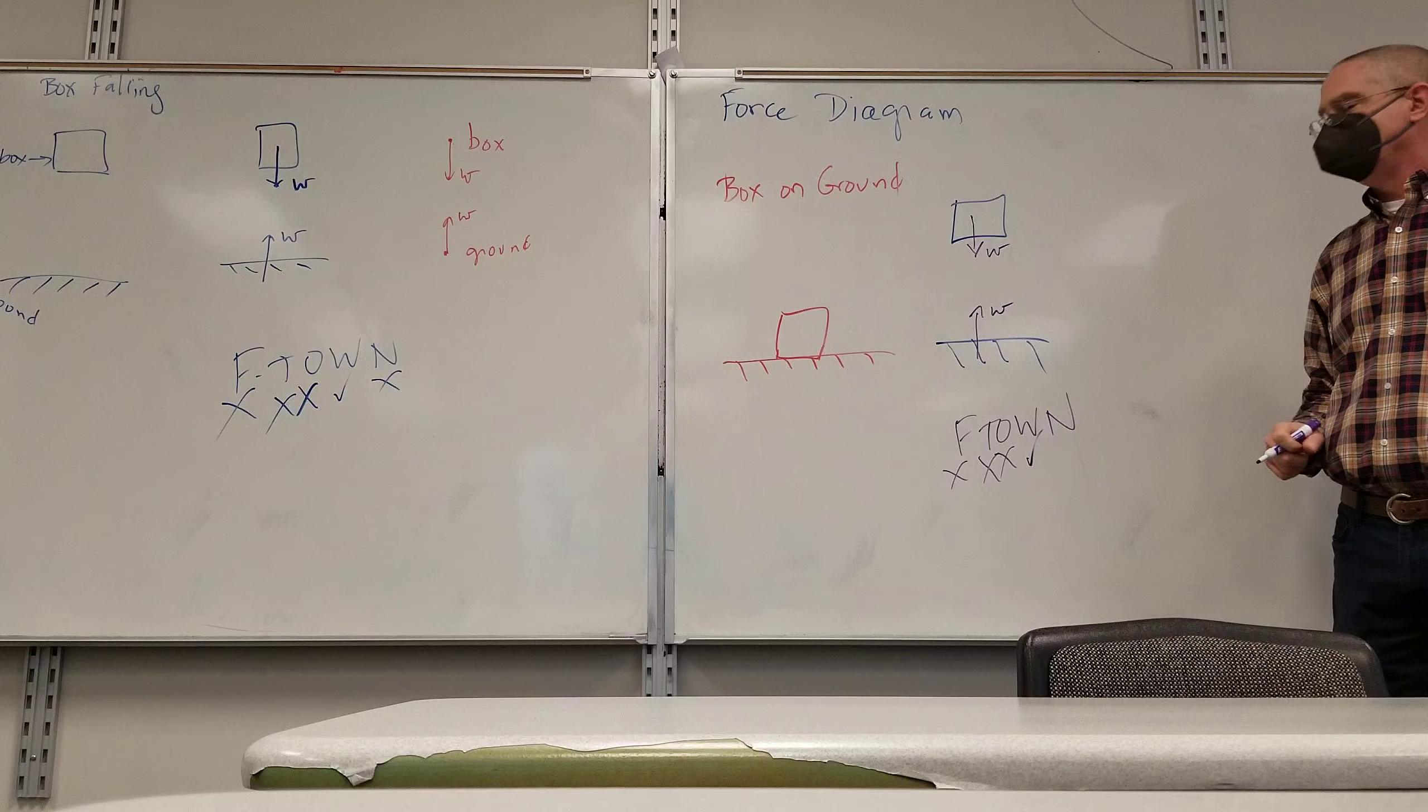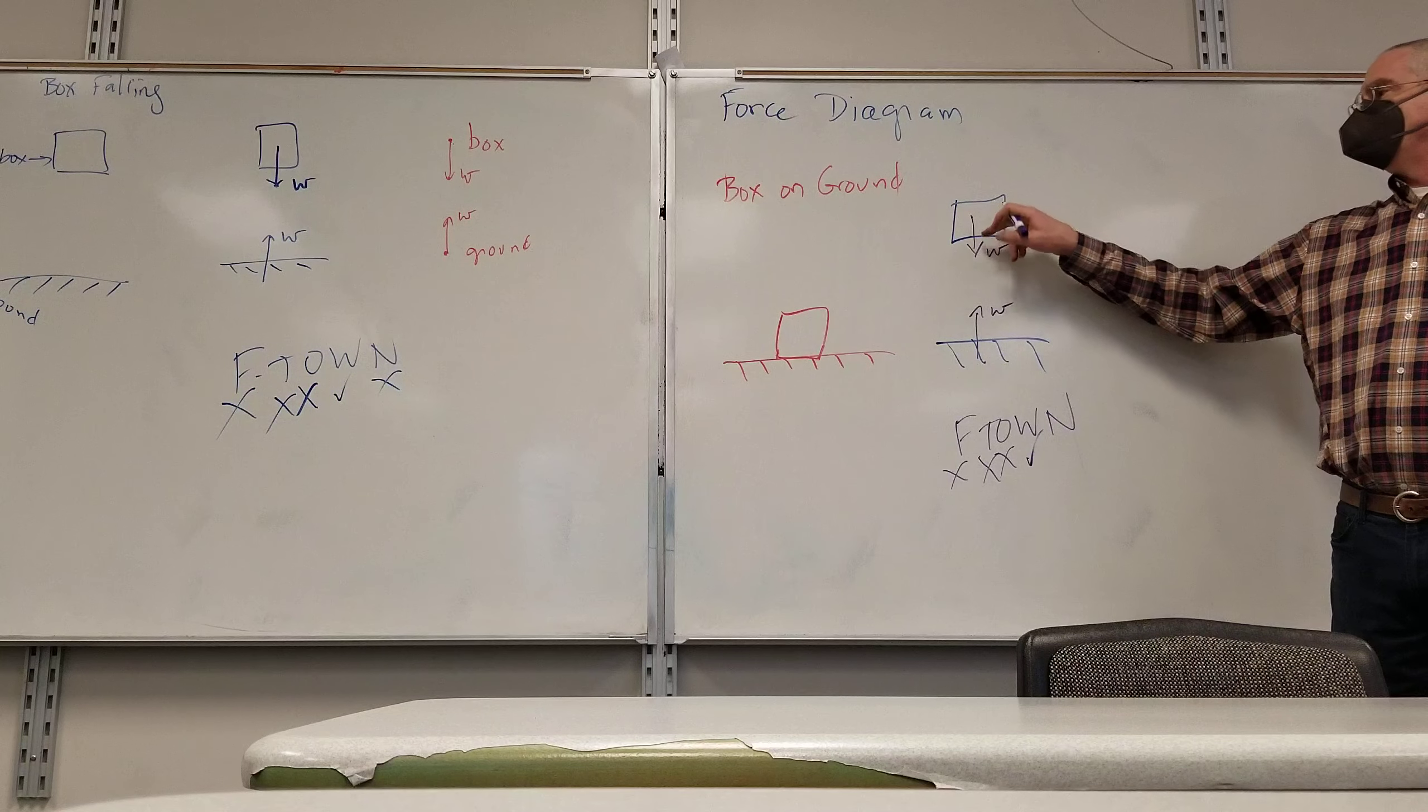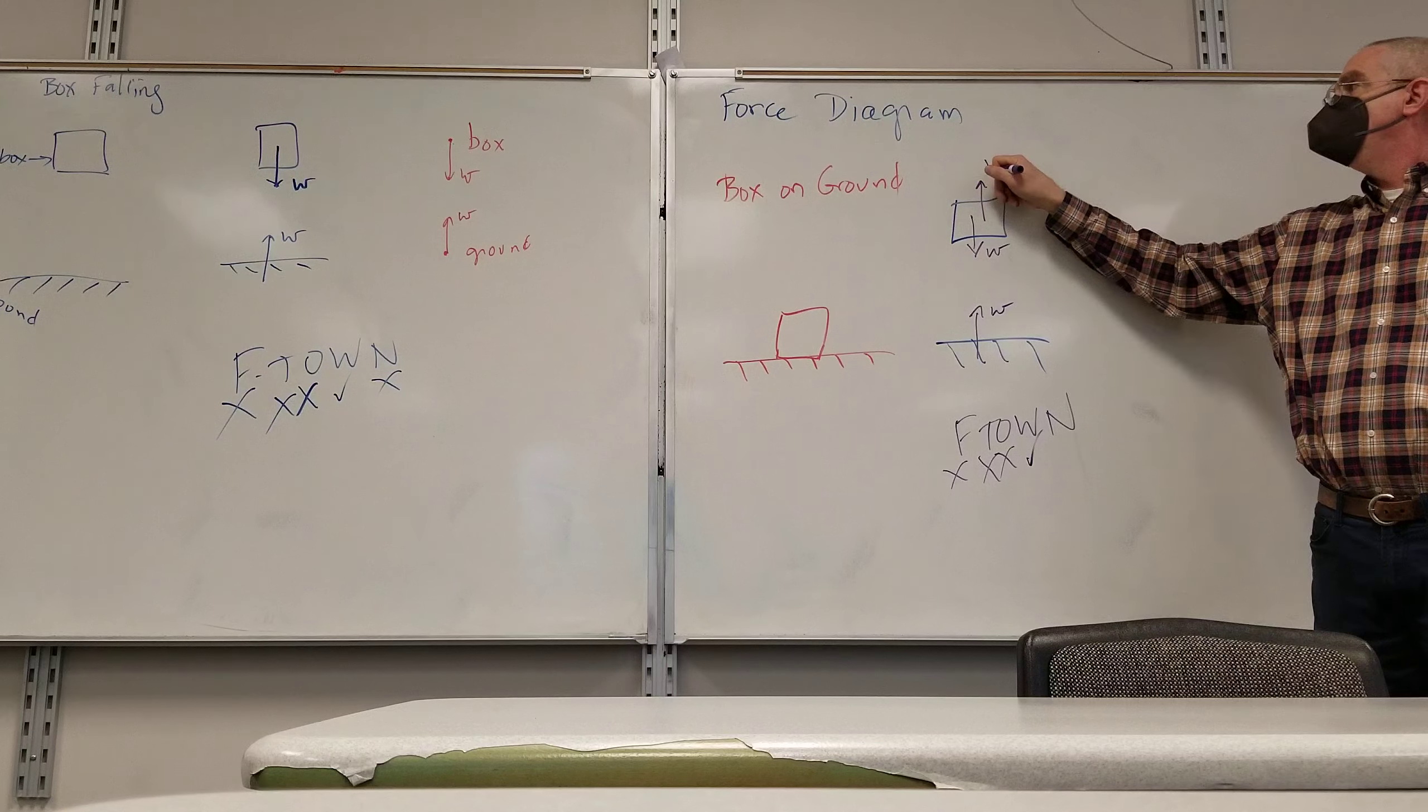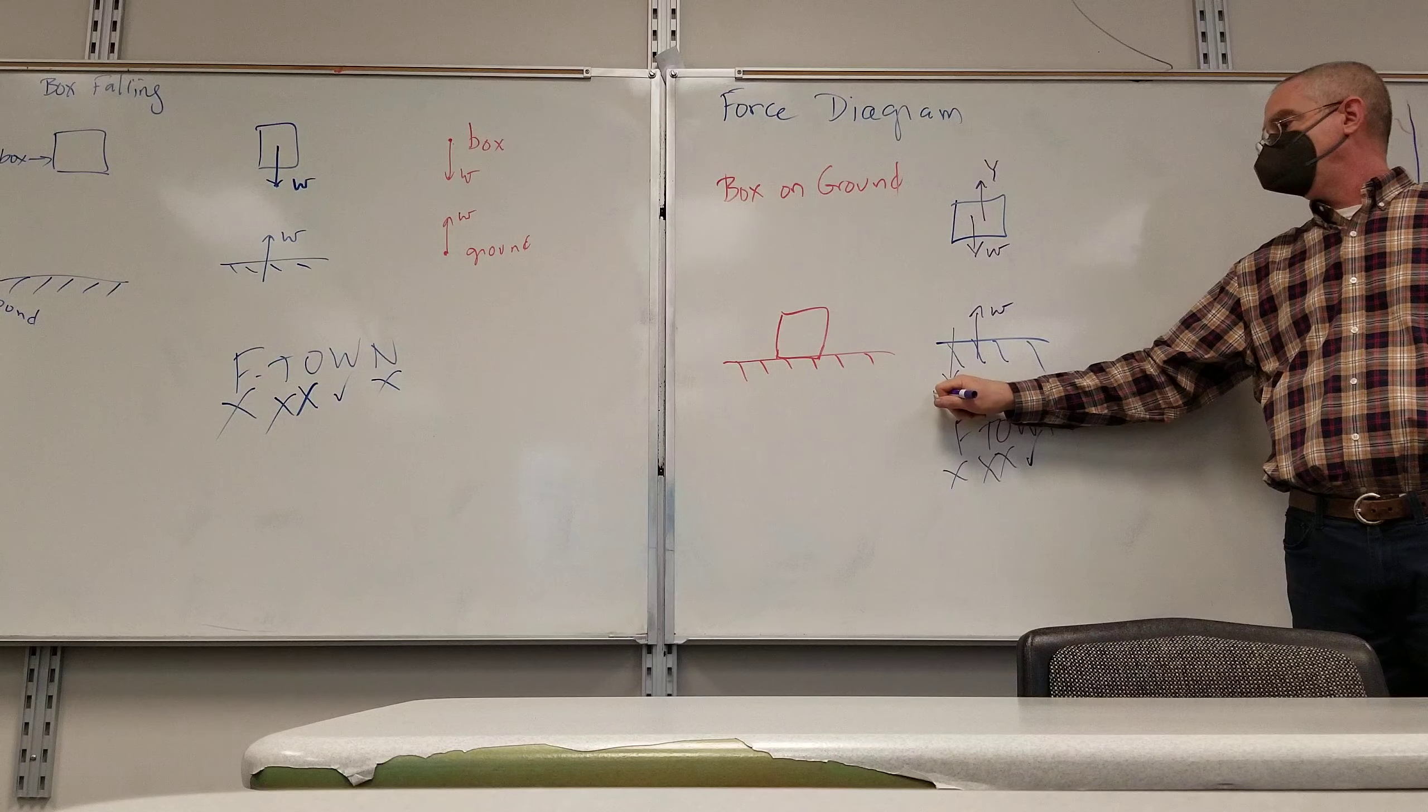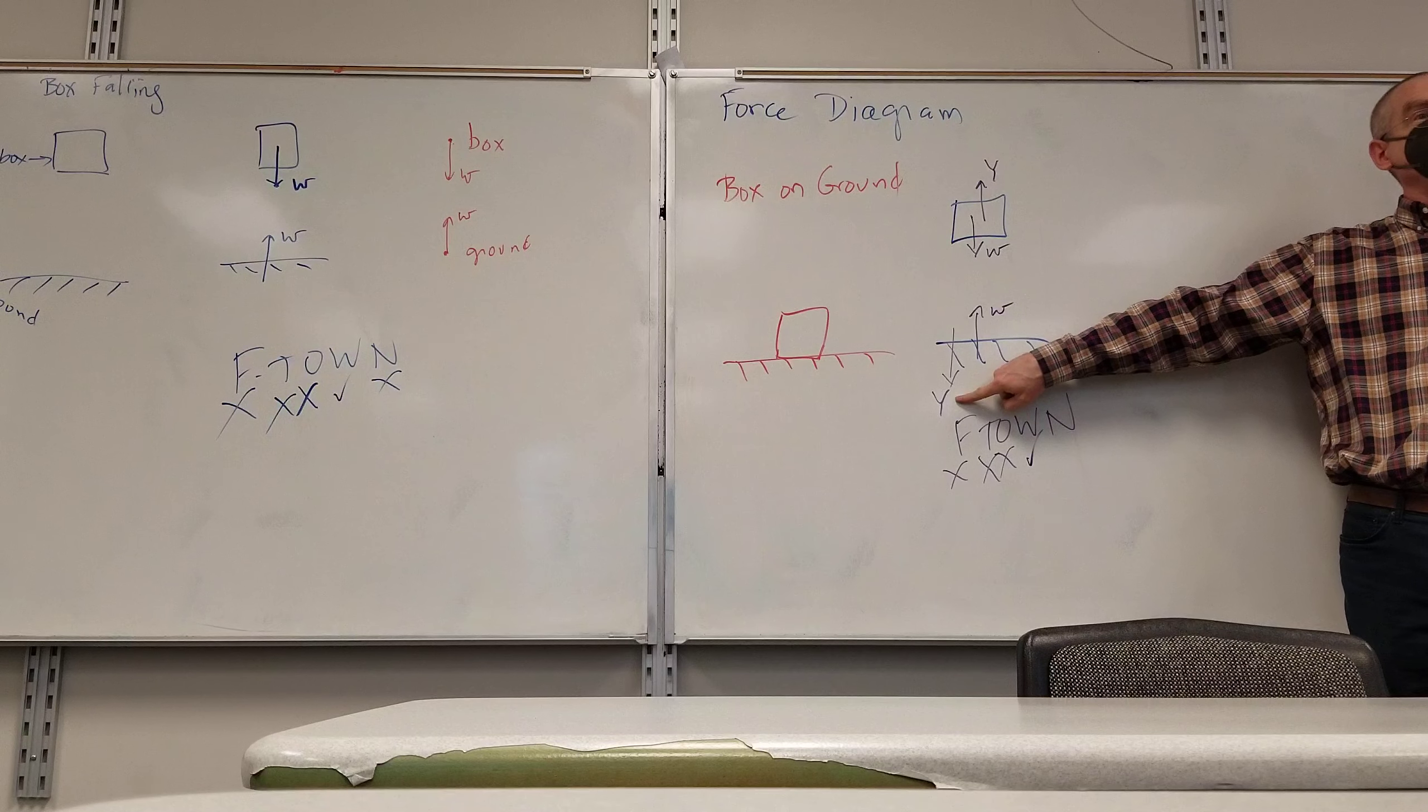That is the normal force. Hewitt refers to it as the support force. So there is a normal force pushing up on the box. It keeps the box from falling. And the box is also pushing down on the ground. If you walk in soft ground and you look back and see your footprints, it's this force right here causing the footprints.